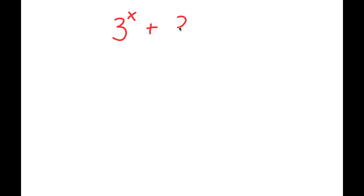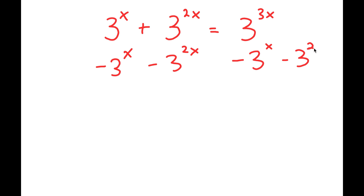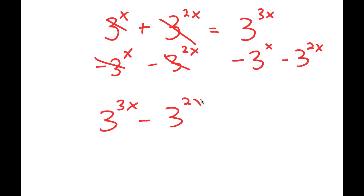All right, so in this video I have 3 to the power of x plus 3 to the power of 2x is equal to 3 to the power of 3x. So what I'm first going to do is subtract 3 to the power of x and 3 to the power of 2x on both sides. So now I get 3 to the power of 3x minus 3 to the power of 2x minus 3 to the power of x is equal to 0.